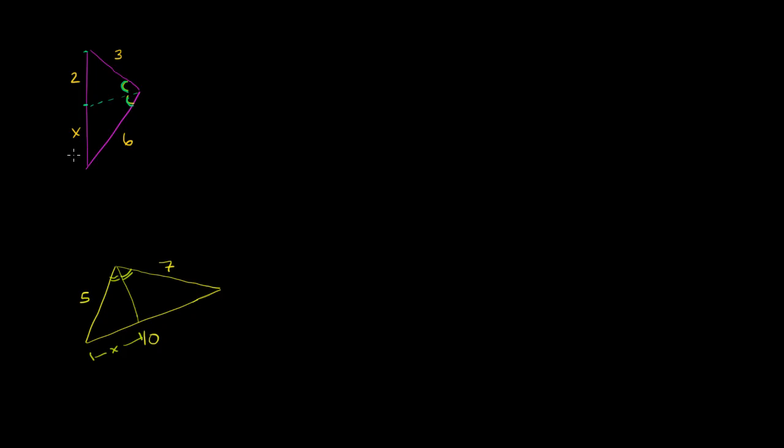So the angle bisector theorem tells us that the ratio of 3 to 2 is going to be equal to 6 to x. And we can just solve for x. So 3 to 2 is going to be equal to 6 to x. And then once again, you could just cross multiply, or you could multiply both sides by 2 and x. It kind of gives you the same result.